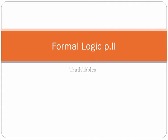Let's continue our discussion of formal logic. We're going to transition now to truth tables, which is a checking procedure to tell if arguments are valid or not.